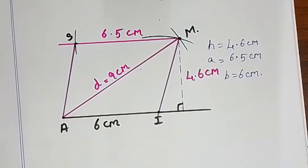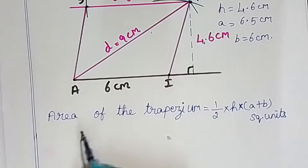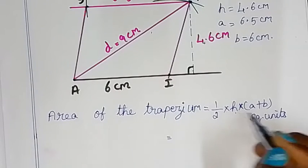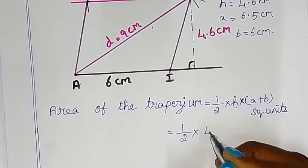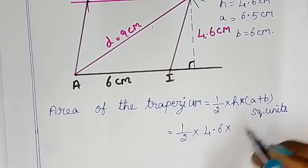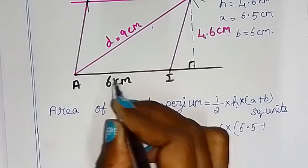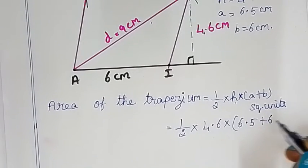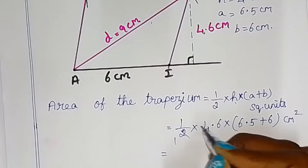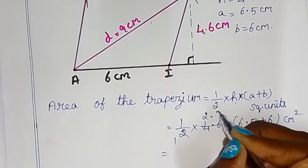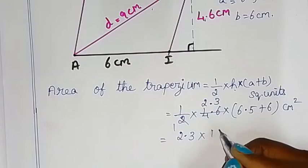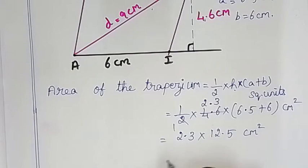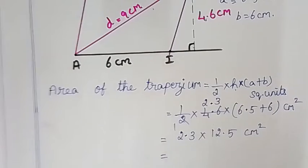Area of the trapezium is equal to half into height into a plus b square unit. So that is equal to half into height 4.6 cm into a 6.5 plus b 6 cm square. So this is equal to 2.3 into 12.5 cm square. So this is equal to 28.75 cm square is our required area.